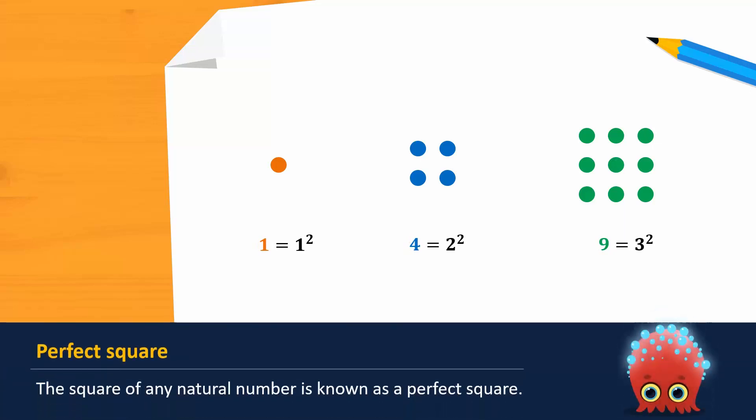The square of any natural number is known as a perfect square. Since 1, 2, and 3 are natural numbers, their respective squares 1, 4, and 9 are all perfect squares.